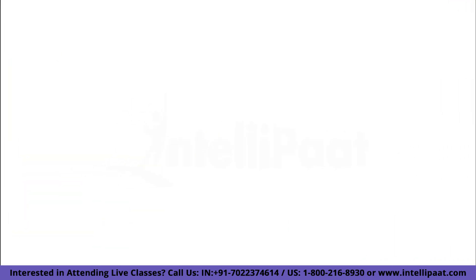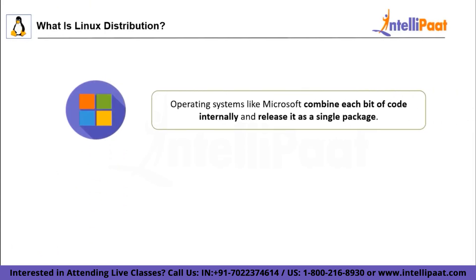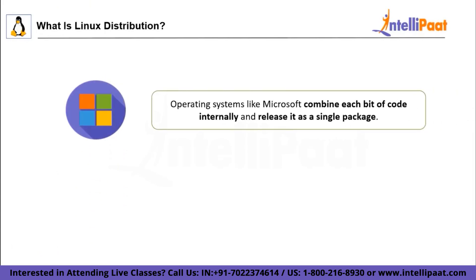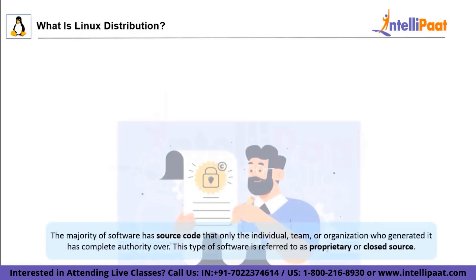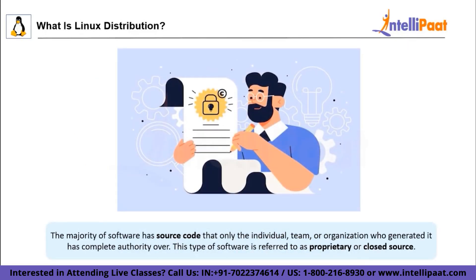What is Linux distribution? Generally, in operating systems like Windows or macOS, each bit of code is combined internally and released as a single package — you choose from one of the versions they offer. But Linux is completely different. Linux is not entirely developed and managed by a single entity. It is basically the world's largest open source software, which can be inspected, run, redistributed or modified by anyone or any organization.